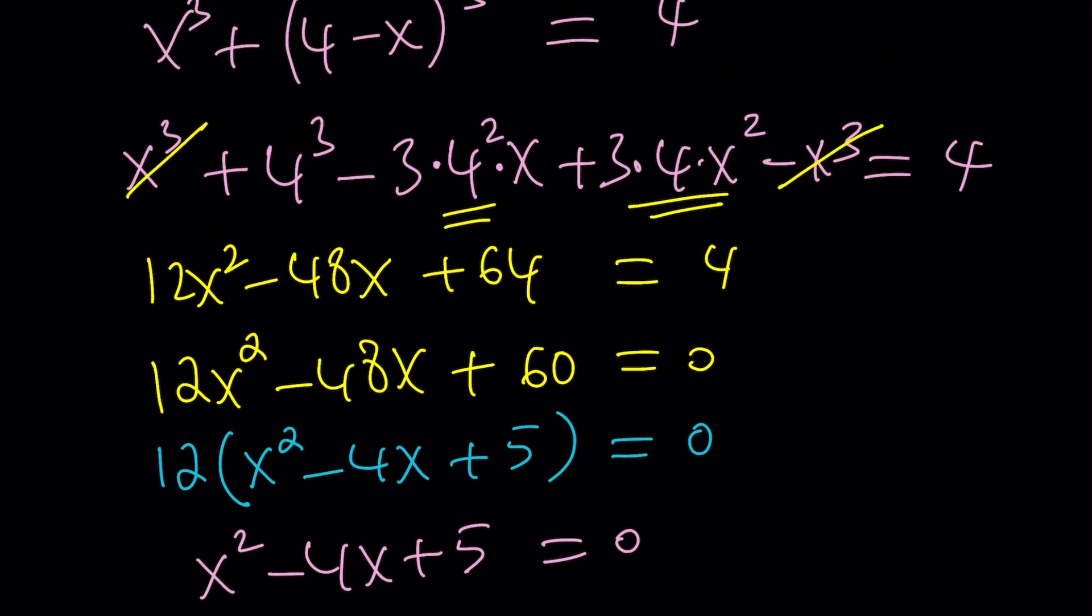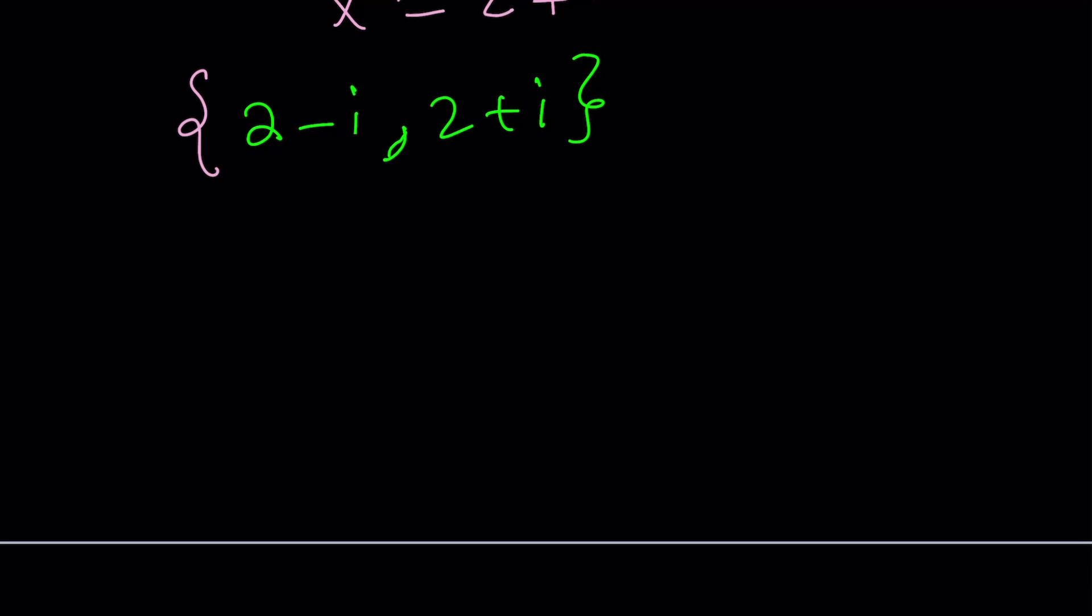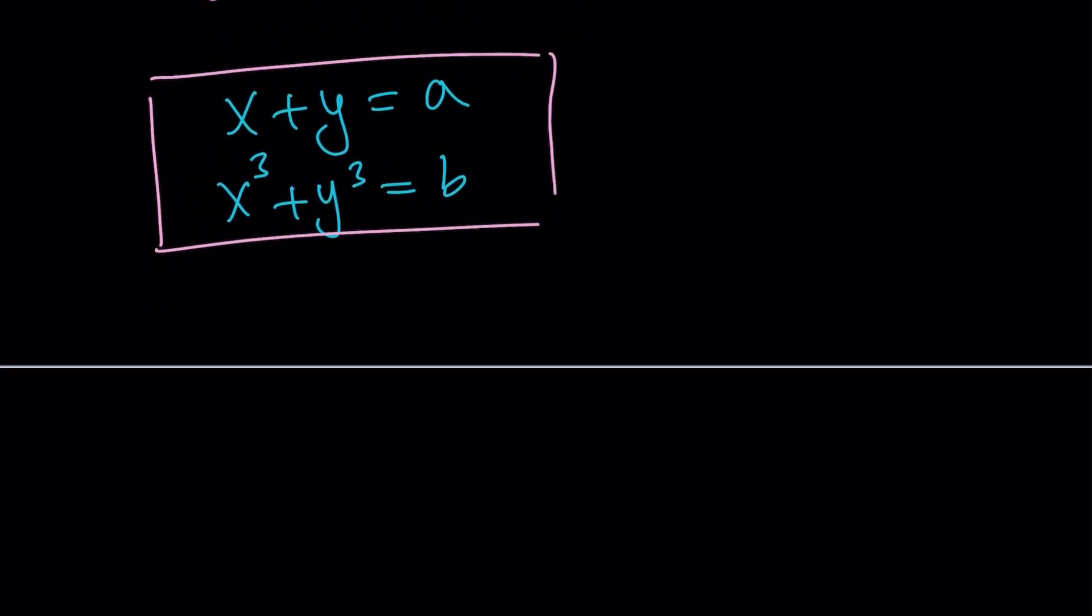It cancels out. So pretty much any system like this can be solved easier, right? Like if you had x plus y equals a and x cubed plus y cubed equals b, or b cubed. Does this system have real solutions? It depends on the values of a and b. You can search for which values of a and b this is going to have real solutions, or for which values of a and b this is going to have complex non-real solutions. Anyway, that's a different story. Let's take a look at the second method now.